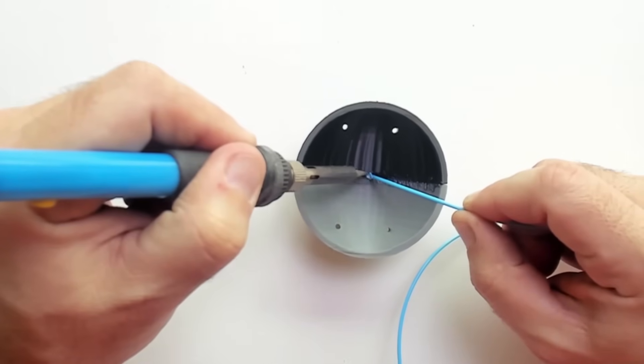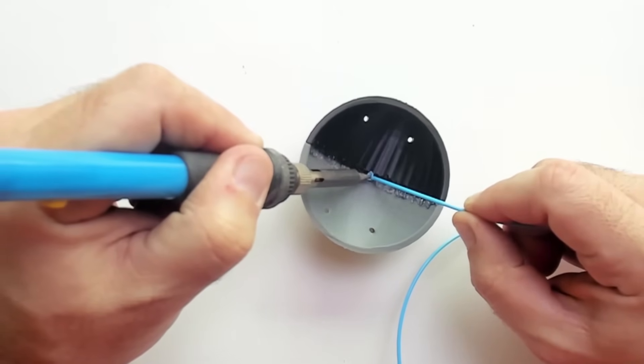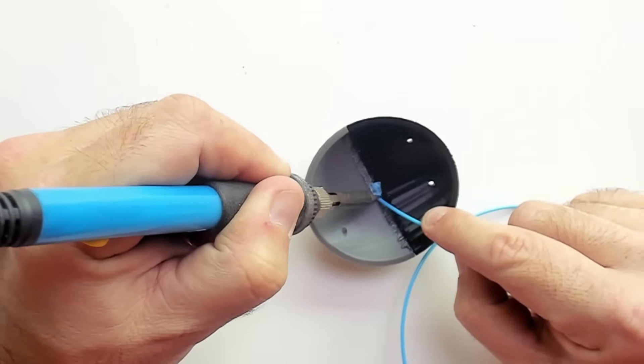You can also use an extra piece of filament and melt it if you need to add more material. I used a blue filament so you can see where it is compared to the black and gray halves.